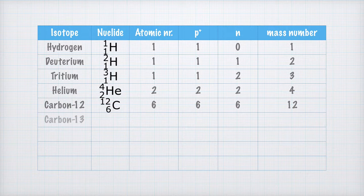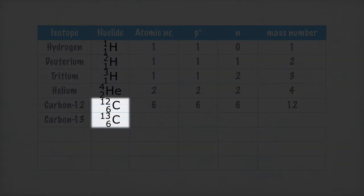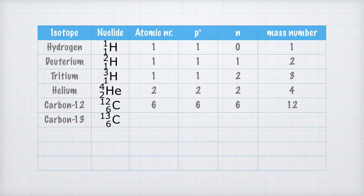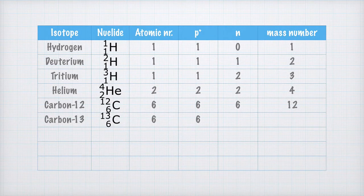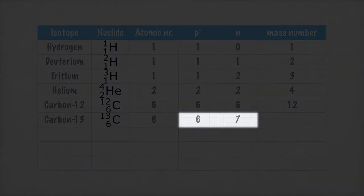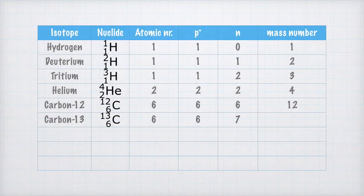Another carbon isotope is carbon-13. The only thing that differs from carbon-12 is the mass number. The atomic number is 6, as well as the number of protons. But since the mass number is 13, the number of neutrons is instead 13 minus 6 equals 7. And we check: 6 plus 7 equals 13, the mass number.